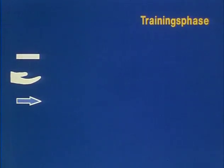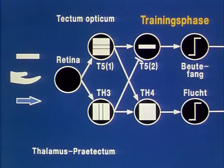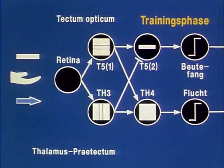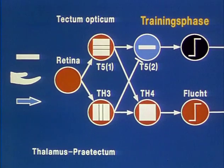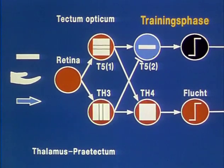If in the training phase, both the prey and the hand are offered, the toad has a choice according to this circuit. The hand should elicit escape, the worm prey catching.